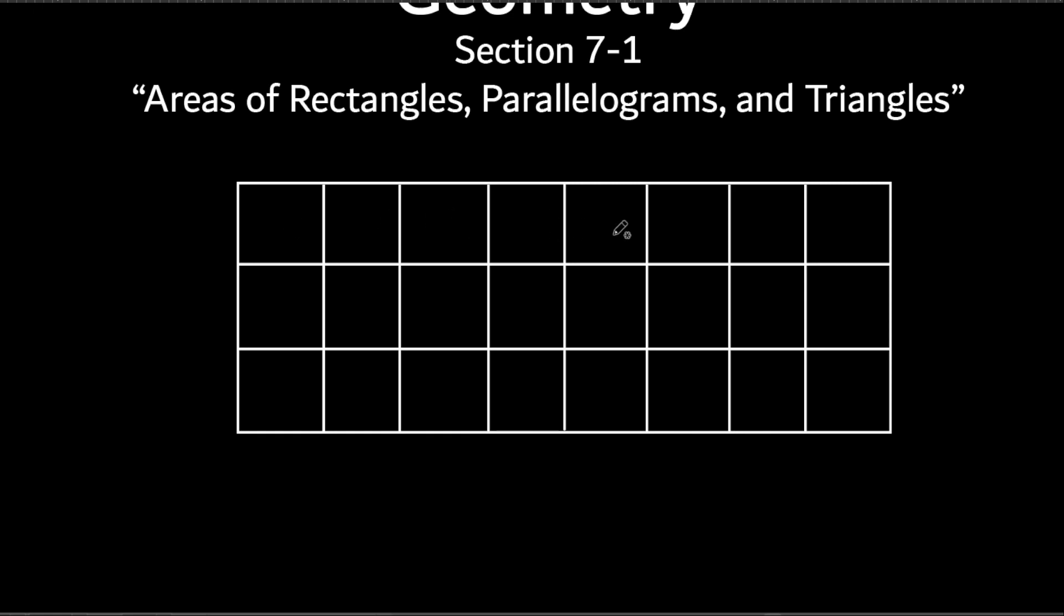But right now, we're just finding out how many squares can fit inside of this thing. So we could just count them all, couldn't we? I could go 1, 2, 3, 4, 5, 6, 7, 8, 9, 10, 11, 12, 13, 16, 24. I could count like that if I wanted to.